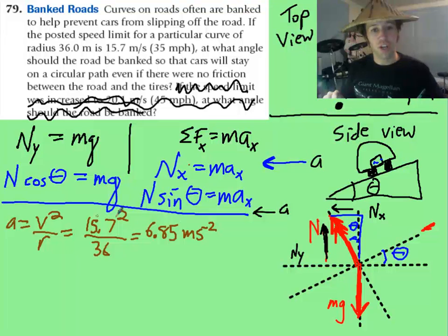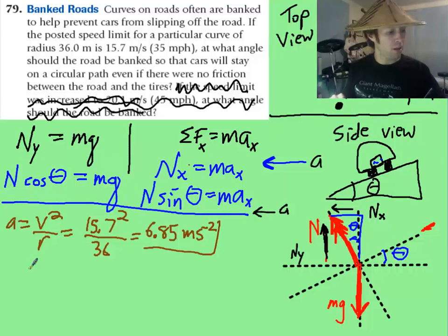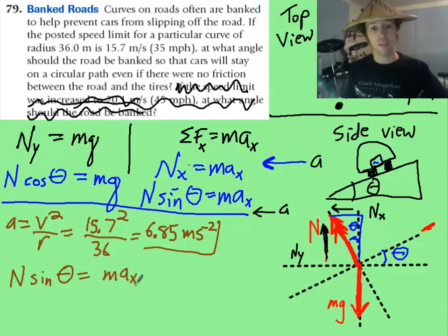Boom! That acceleration should now be easy, because you know to use v squared over r, and with your r being the radius of the circle that he's turning in, and then you get this acceleration. Now, you just need to do some clever algebra. And what we can say, if we want to eliminate some of these variables, that we don't know what mass is, and we don't know what the normal force is. So if we say n sine theta equals m a sub x, and we divide this whole situation by the other equation, just like this.